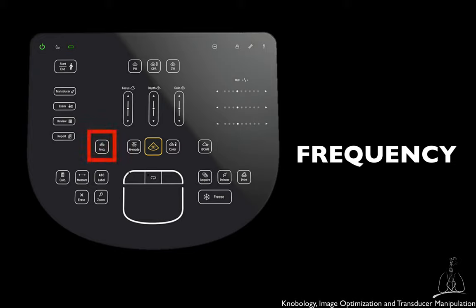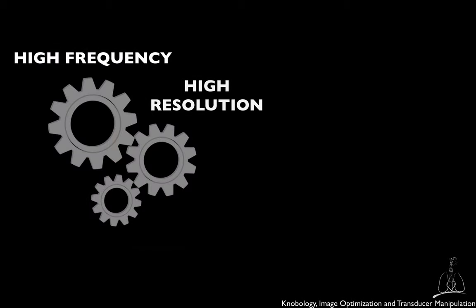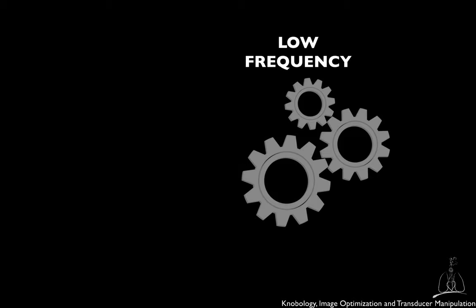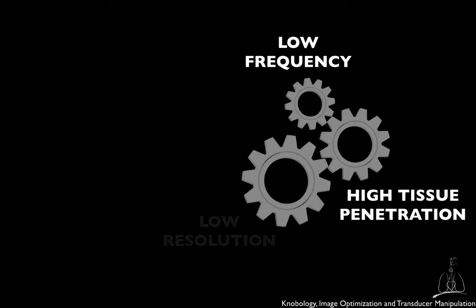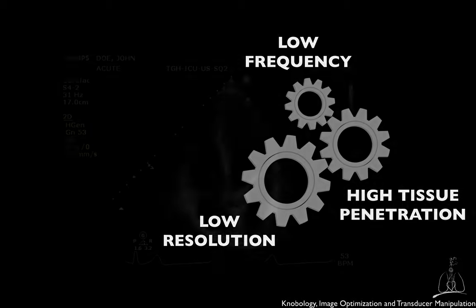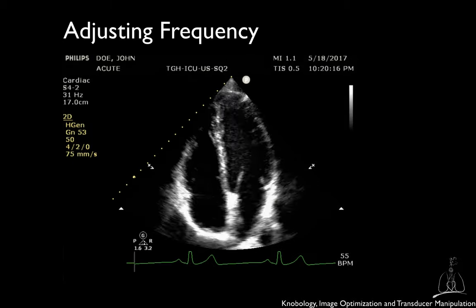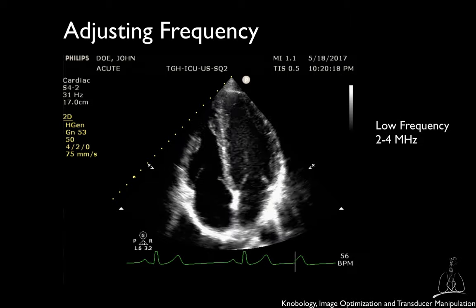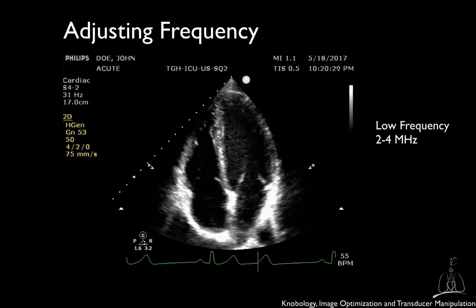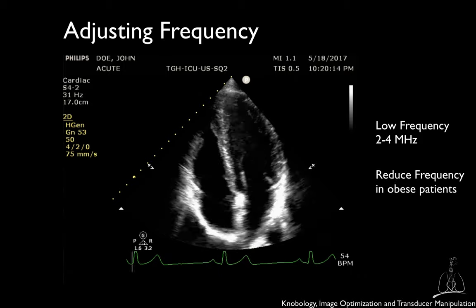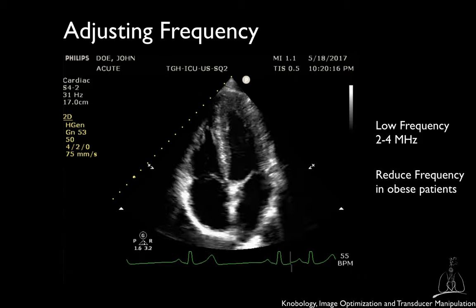The frequency of the ultrasound transducer affects image resolution and tissue penetration. High frequencies allow higher resolution but low tissue penetration, while low frequencies allow higher tissue penetration but lower resolution. Adult transthoracic echocardiography usually employs low frequency transducers, 2-4 MHz. In obese patients, for example, it may be useful to decrease the frequency to obtain better image quality.